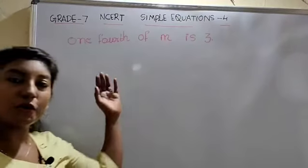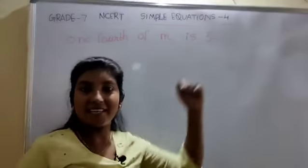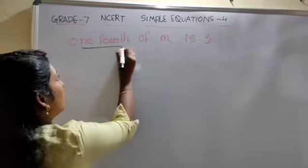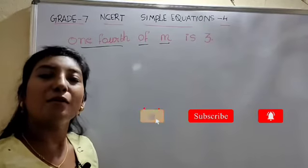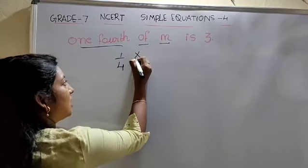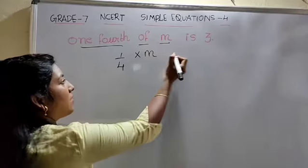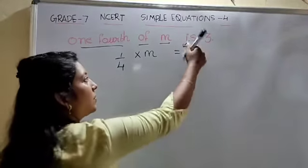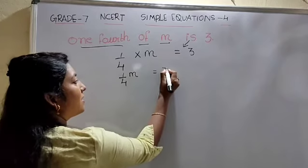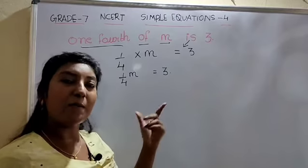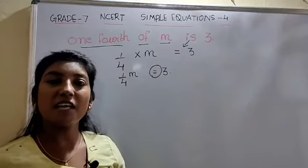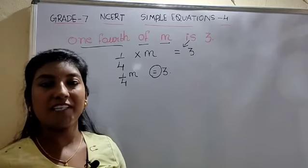Let us see one more example: one-fourth of m is 3. We have to convert this statement into an equation. One-fourth means 1 by 4, and 'of' always represents multiplication — that is, 1/4 into m, where m is a variable. 'Is' means equals to 3. So, one-fourth of m equals to 3. We have made the two expressions into an equation using the symbol equals to.